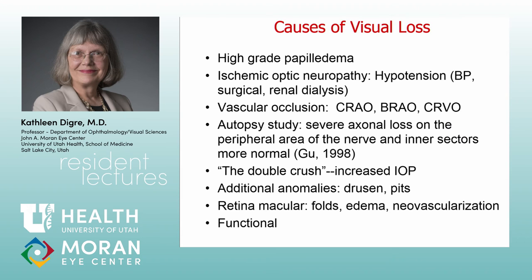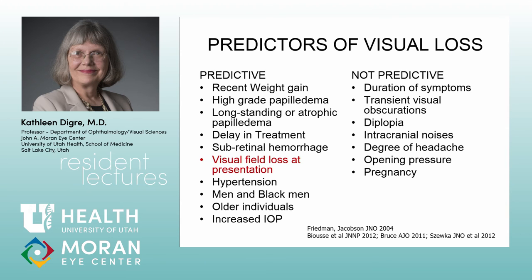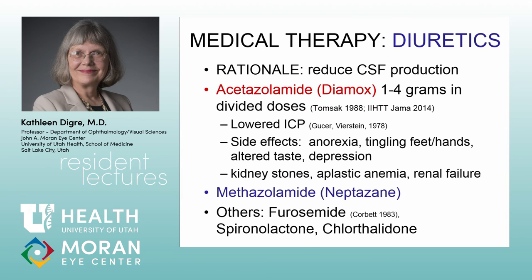Predictors of visual loss include: a lot of recent weight gain, high-grade papilledema, long-standing or atrophic papilledema that wasn't recognized — that's a recipe for problems — delay in treatment, and visual loss at presentation was the most helpful predictor in a recent study. Hypertension and being male — especially African-American men who often don't get seen early enough — and older age and high intraocular pressure also increase risk. Headache does not predict visual loss.